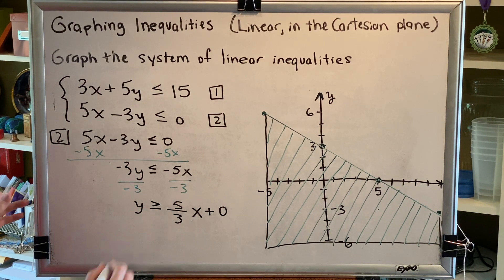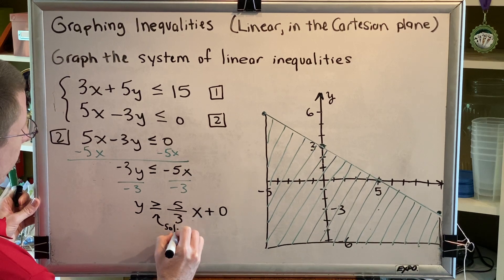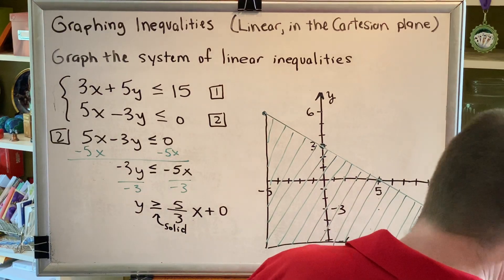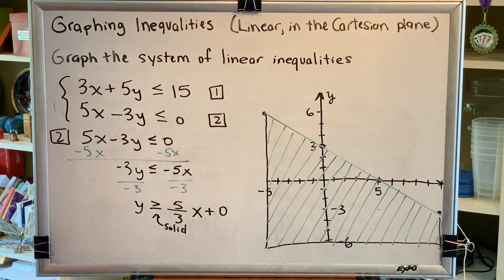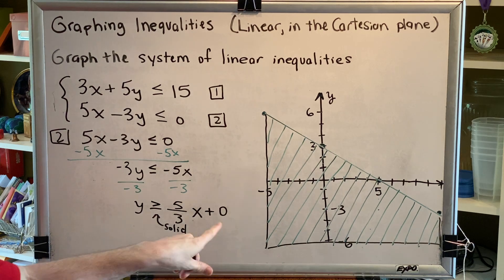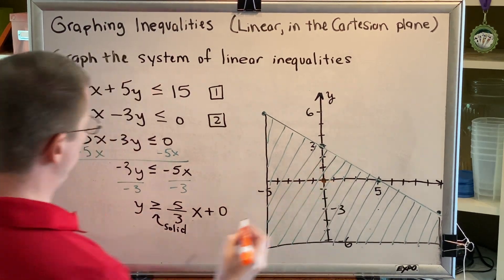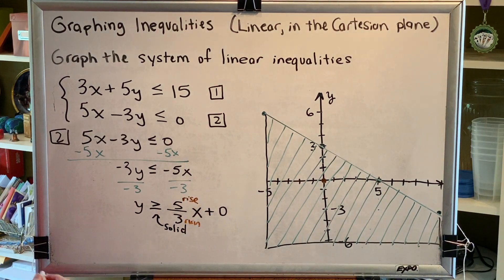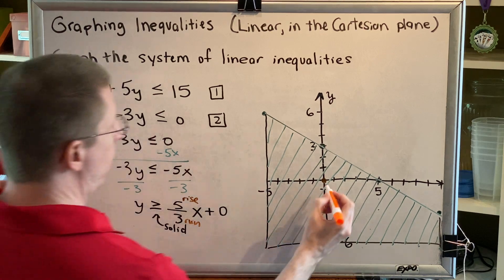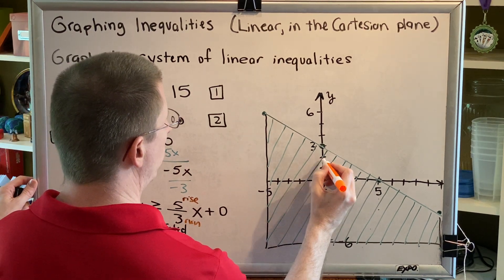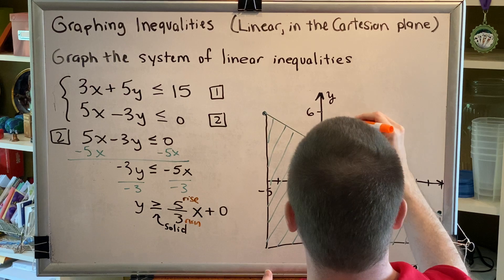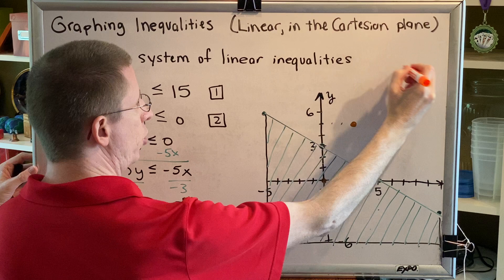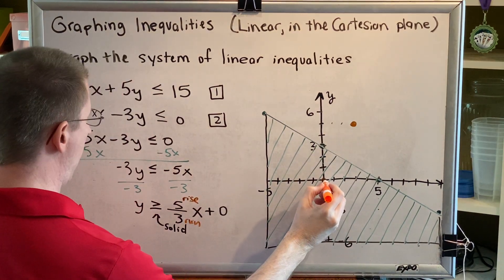Step two is to draw this line. We're going to draw a solid line using the slope-intercept method. I'm going to change to orange so we can tell these apart. The y-intercept is 0. The slope is 5/3, which tells me how to rise and run to find other points on my line. I'm going to go up 5, right 3 from the intercept. I'm pretty much out of room, so I'll come back to the intercept and do the opposite.